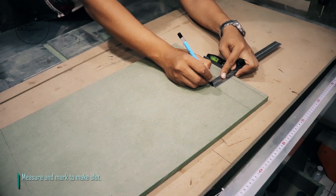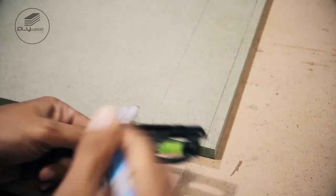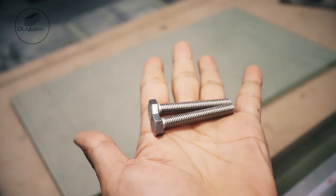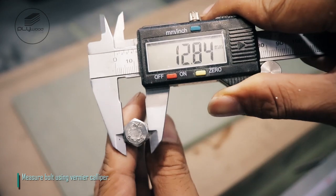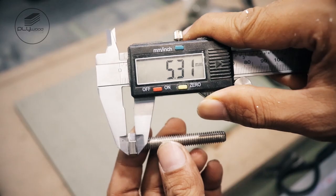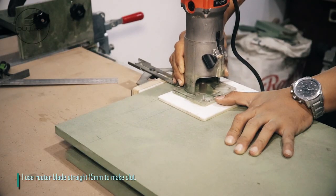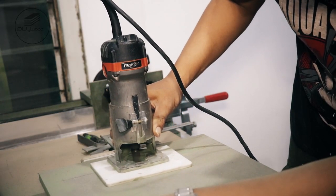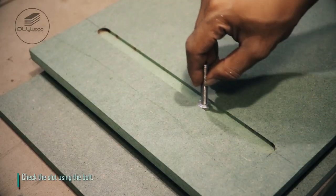Measure and mark to make slot. Measure bolt using Vernier Caliper. I use router blade straight 15mm to make slot. Check the slot using the bolt.